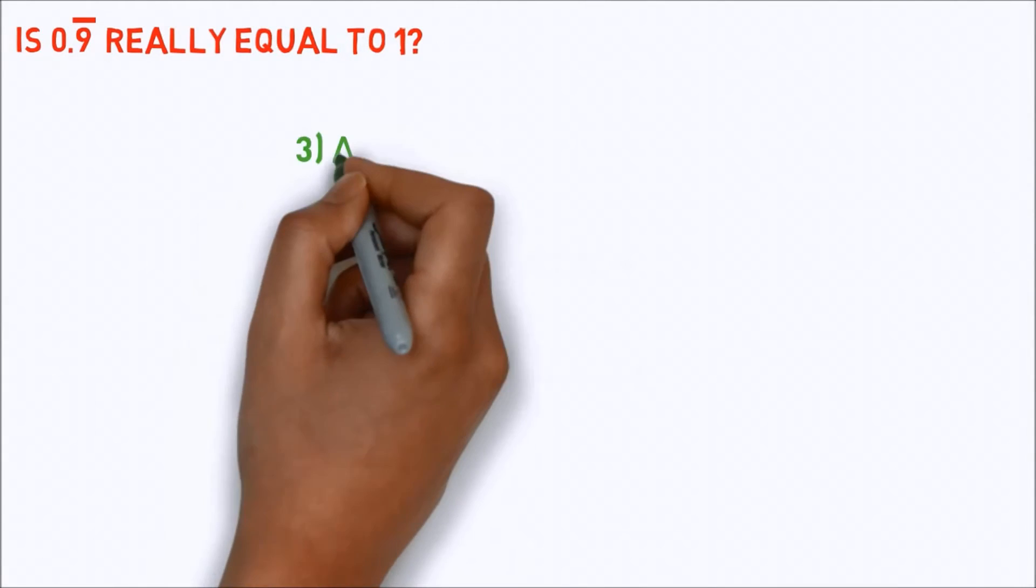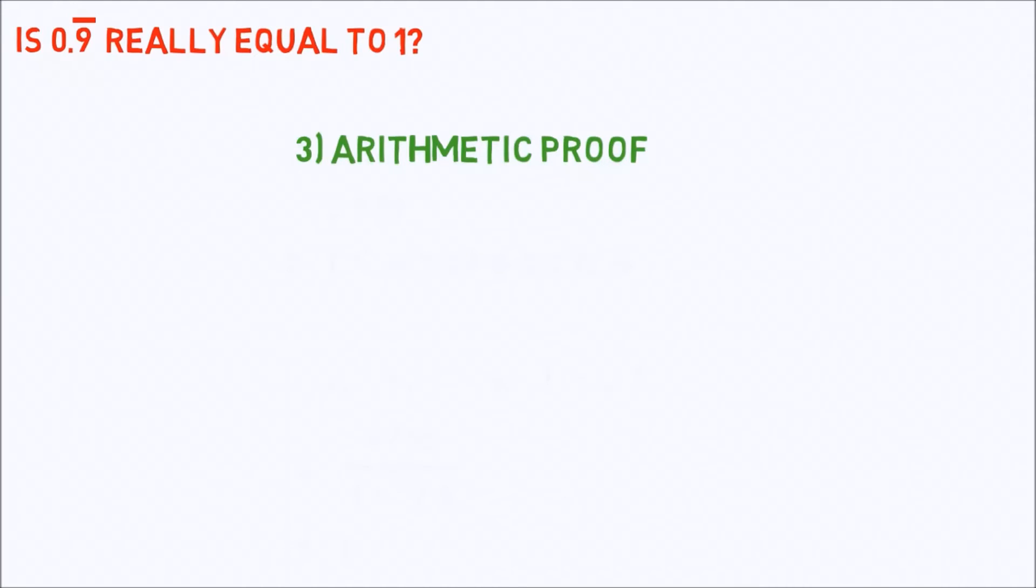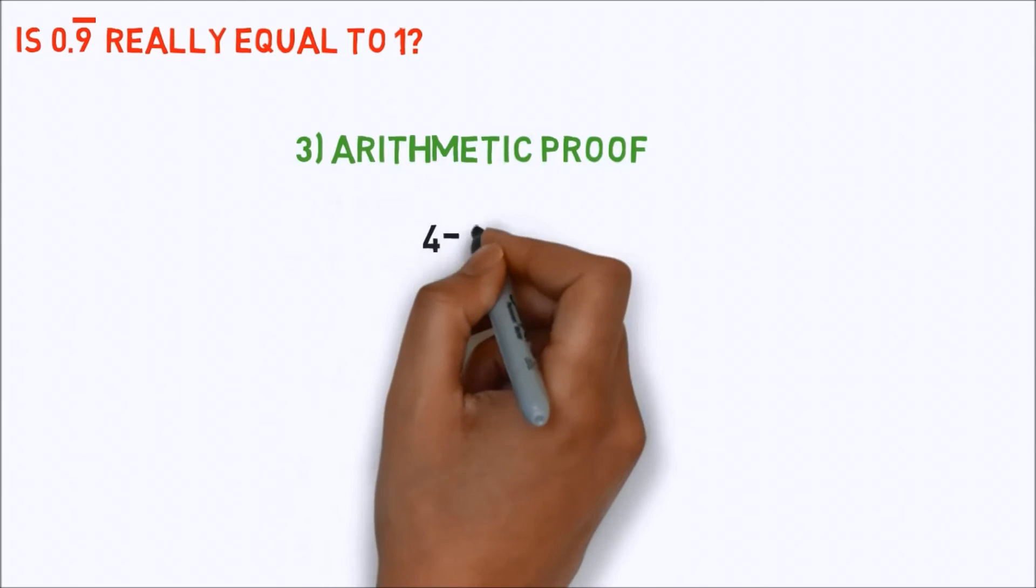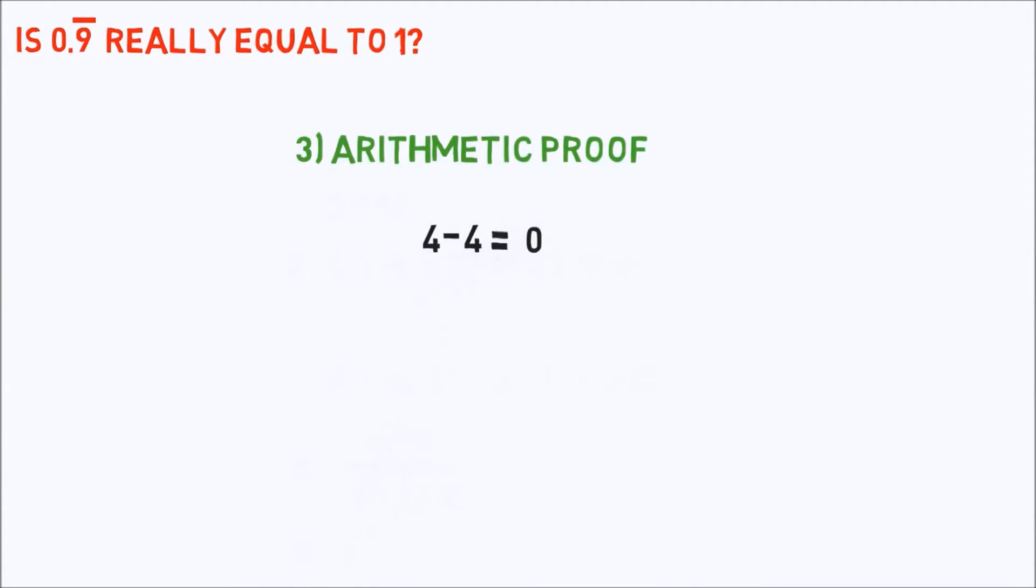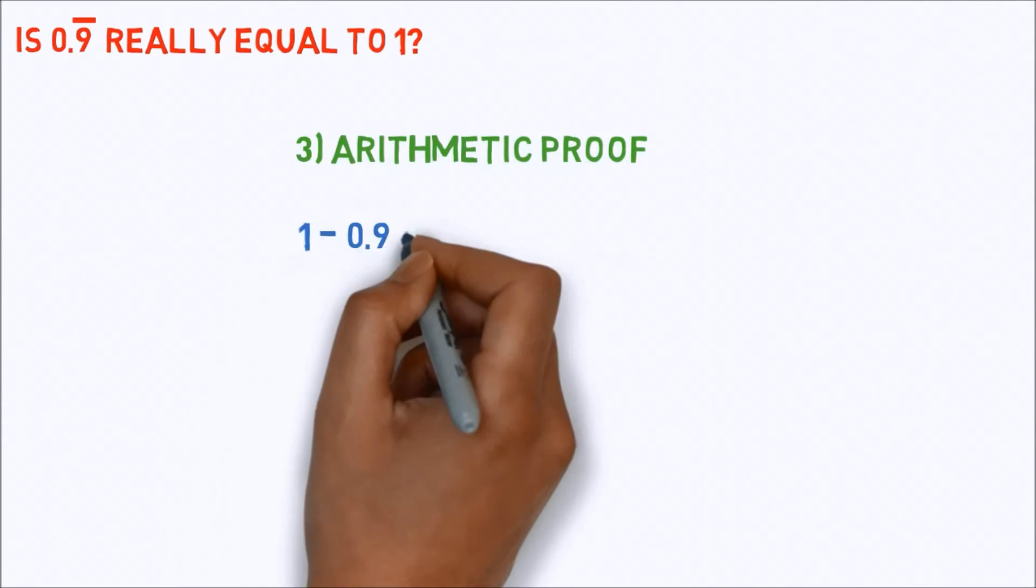Now, moving to arithmetic proof. When you subtract a number from itself, the result is 0. For instance, 4 minus 4 equals 0. So, what is the result when you subtract 0.9 bar from 1?